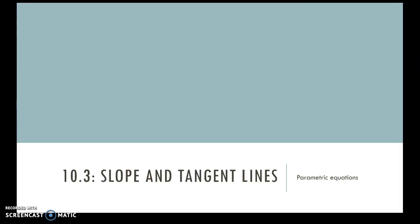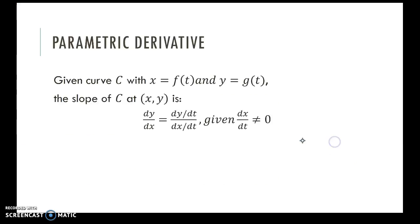Okay, so 10.3, the slope and tangent lines of parametric equations. So given a curve C defined parametrically, so x is in terms of t, y is in terms of t, then the slope of the curve at any given point can be found by the value of the derivative.